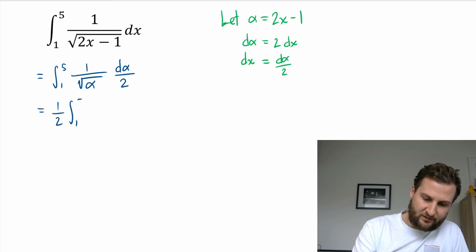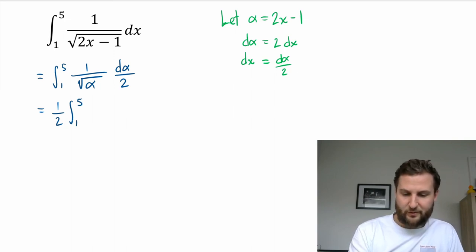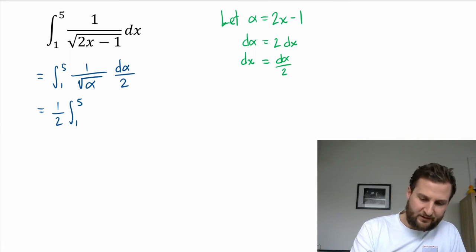So that 2 doesn't really phase me too much, I can actually bring the 1 half out front as a constant, and then I just have 1 over root alpha which is the same as alpha, and then what's the exponent here? It's a 1 half but negative.